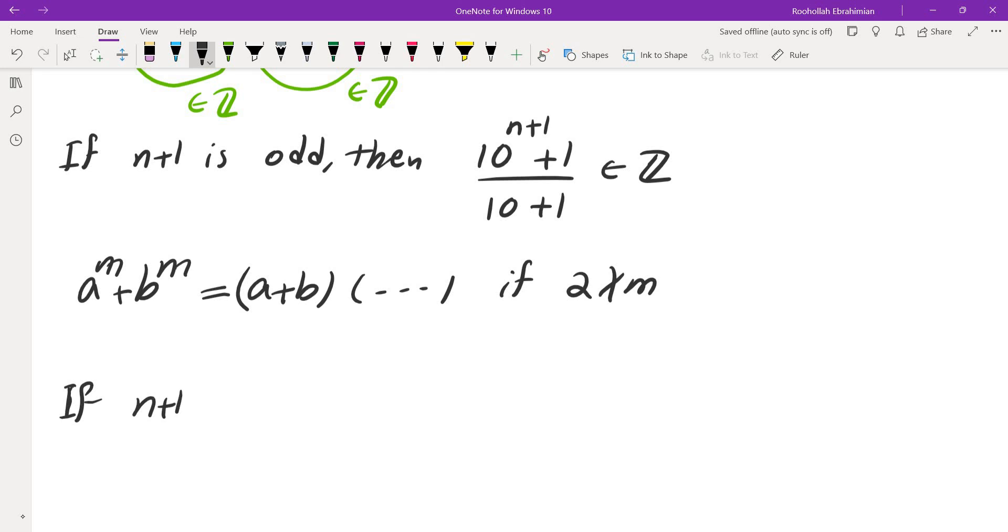Let's see what happens when n plus 1 is even. If n plus 1 is even, then 10 to the power of n plus 1 minus 1 over 10 squared minus 1 is in fact an integer, and of course, 10 to the power of n plus 1 plus 1 is also an integer.